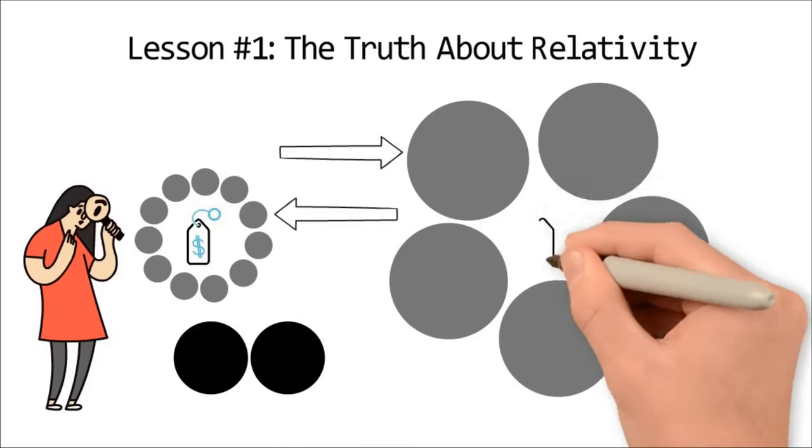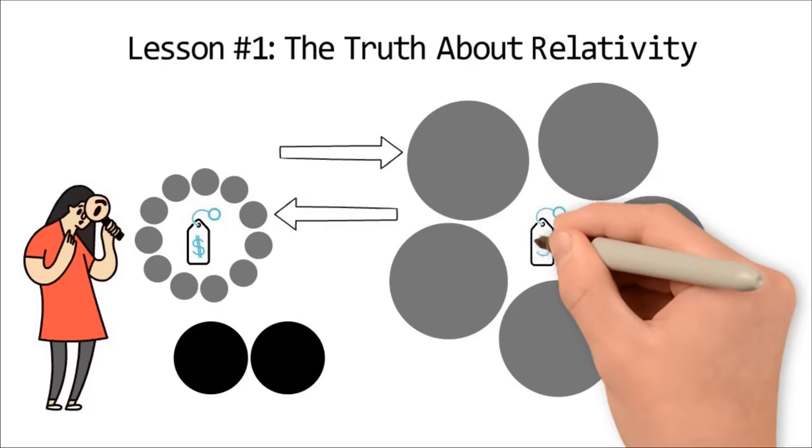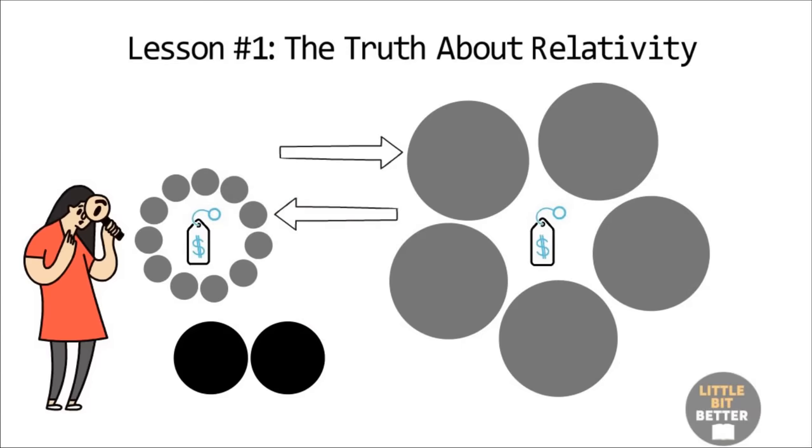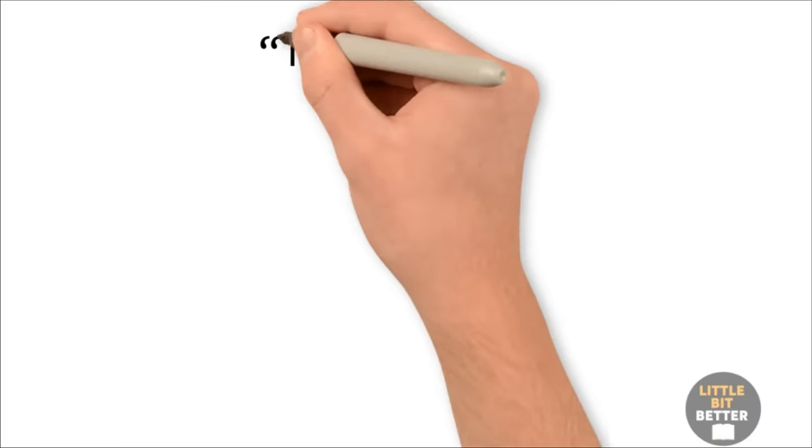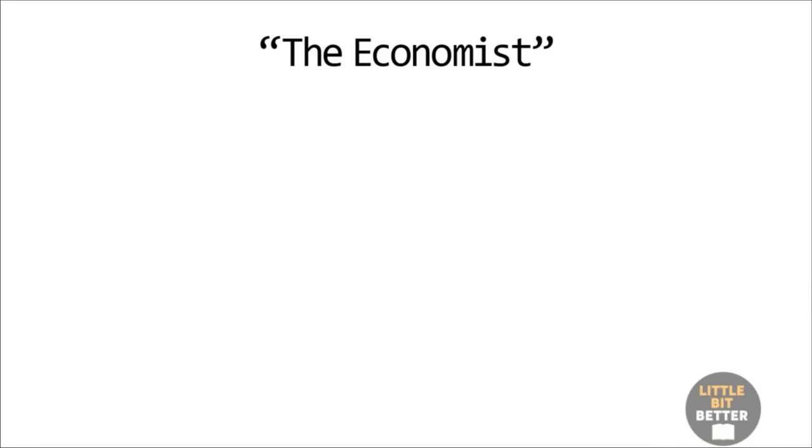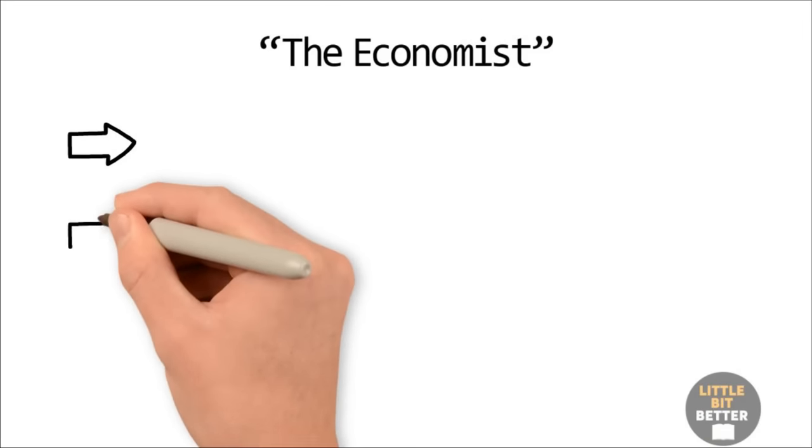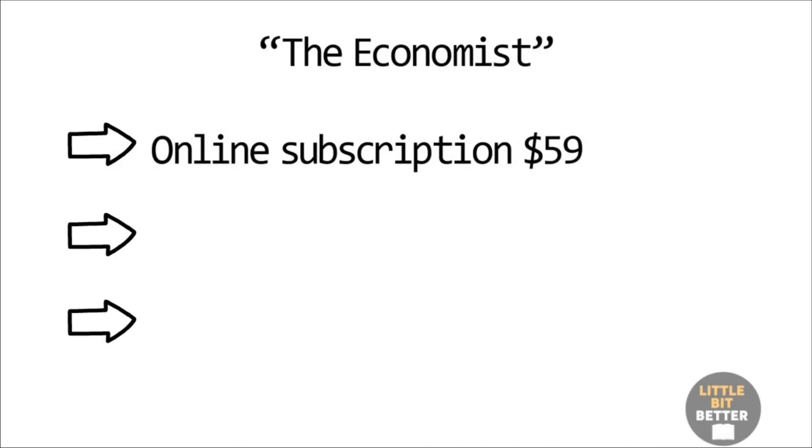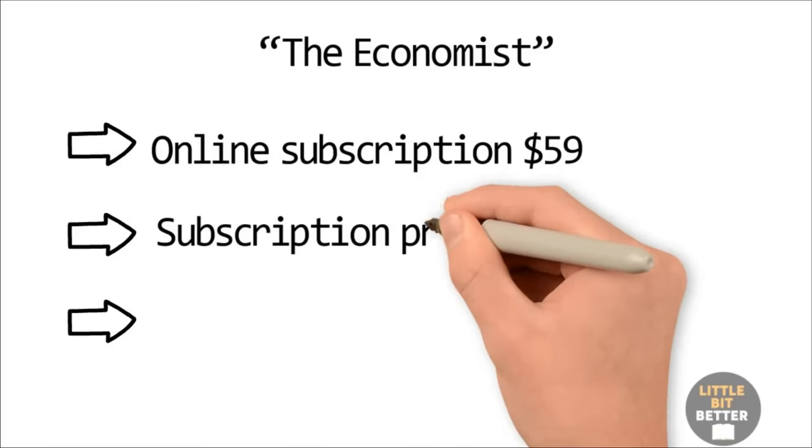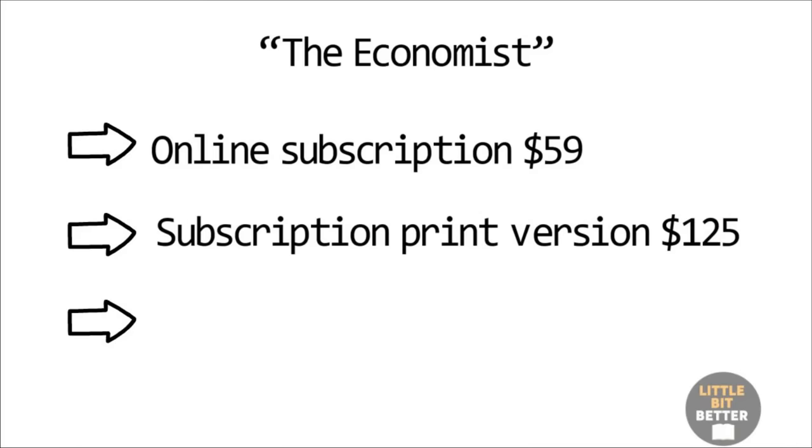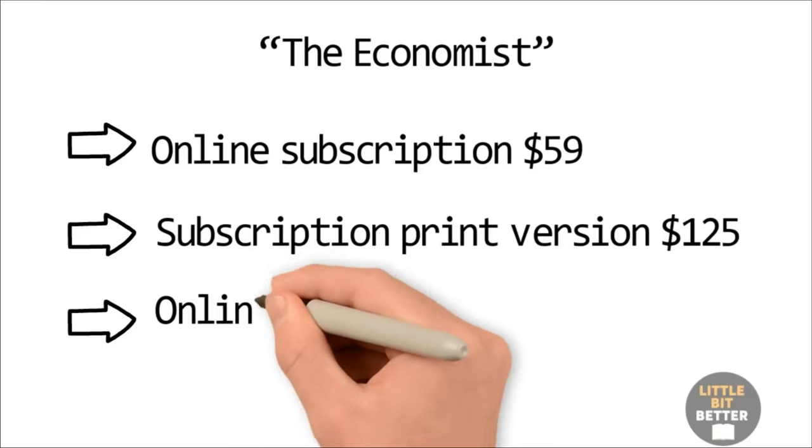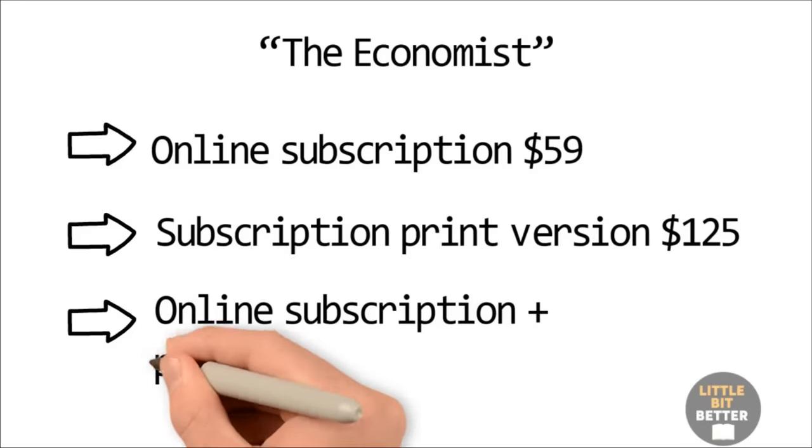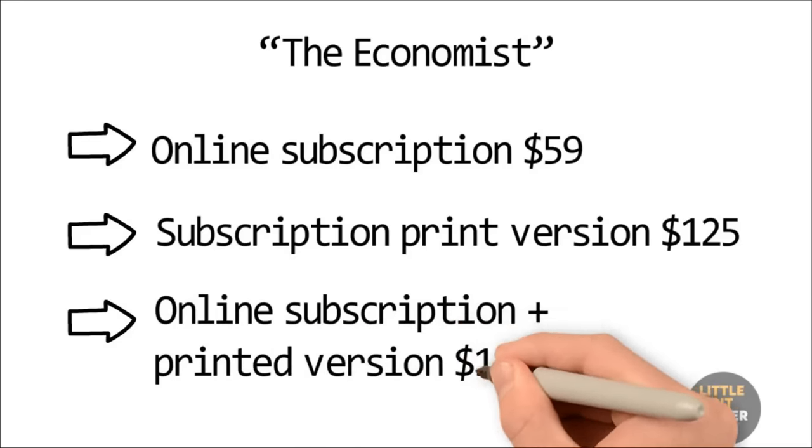This is also used by marketers when pricing their products and services. The author uses, as an example, the subscription prices of The Economist Journal. The promotion featured three subscription options: online subscription $59, subscription print version $125, online subscription plus printed version $125.